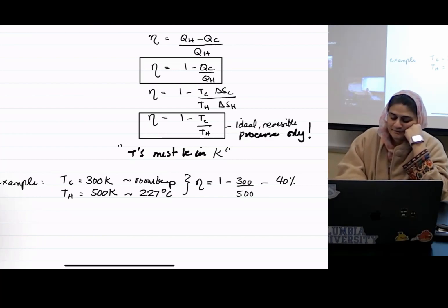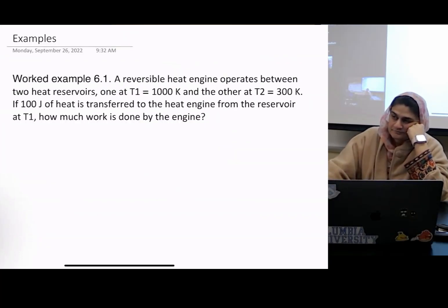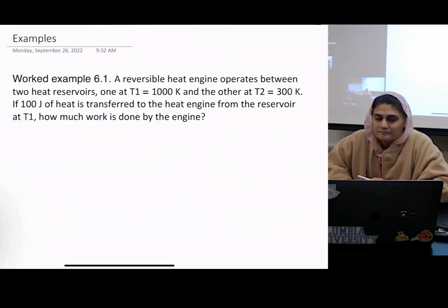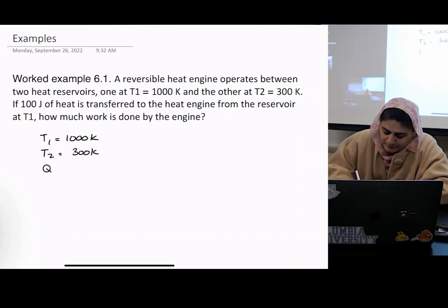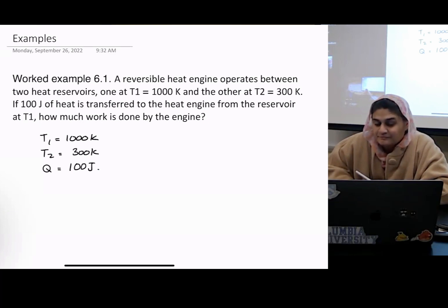So now let's do an example. Worked example 6.1. A reversible heat engine operates between two heat reservoirs, one at T1 equals 1,000 Kelvin, and the other at T2 equals 300 Kelvin. If 100 joules of heat is transferred to the heat engine from the reservoir at T1, how much work is done by the engine?